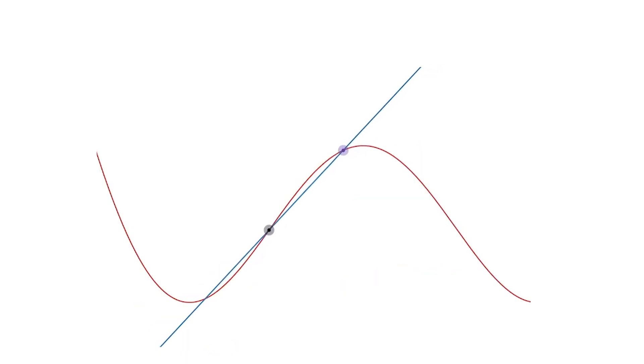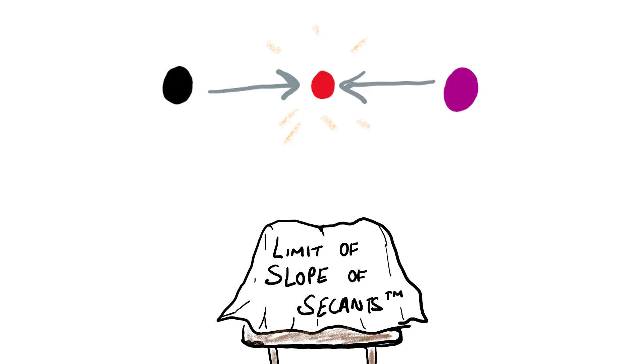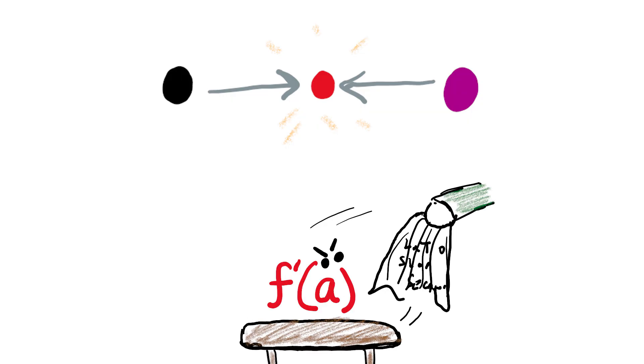You may have seen a tangent line being constructed as a limit of secant lines. But this construction is secretly two separate limits. The points are separately getting closer, and the slope of the secants is becoming the slope of the tangents, which is just the derivative.